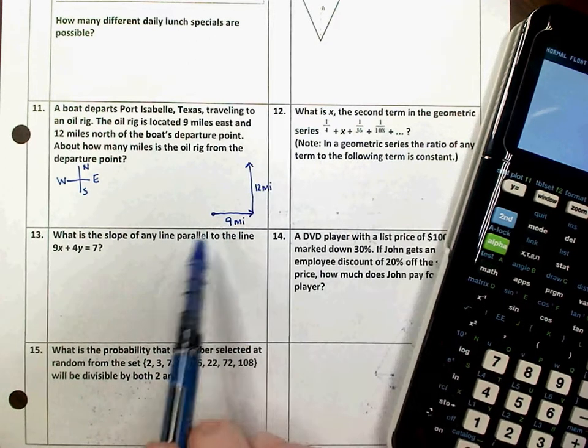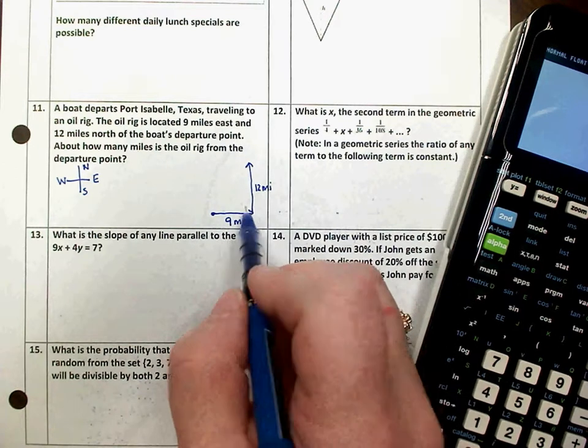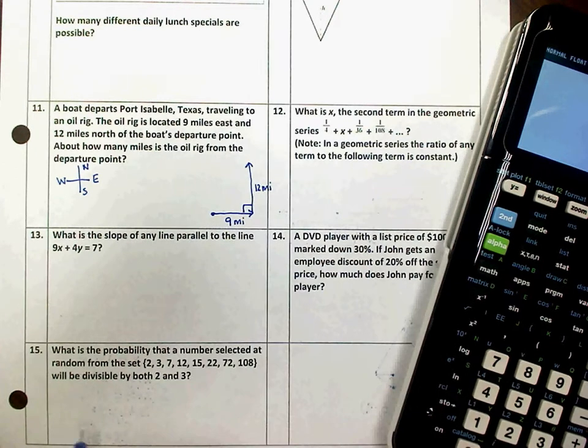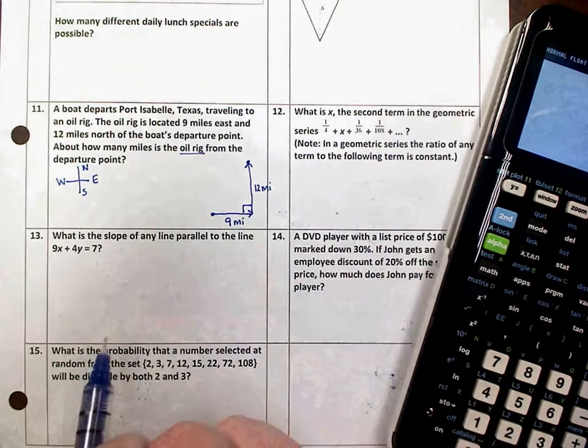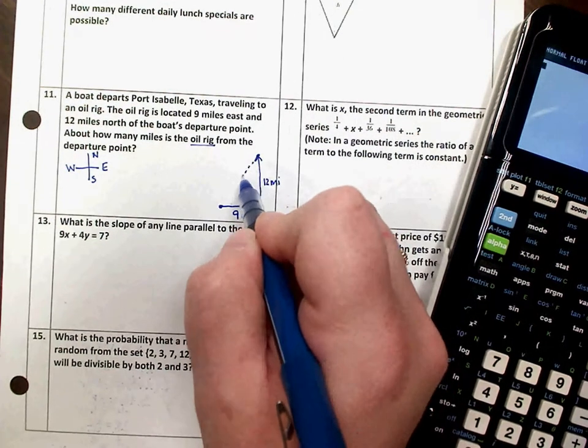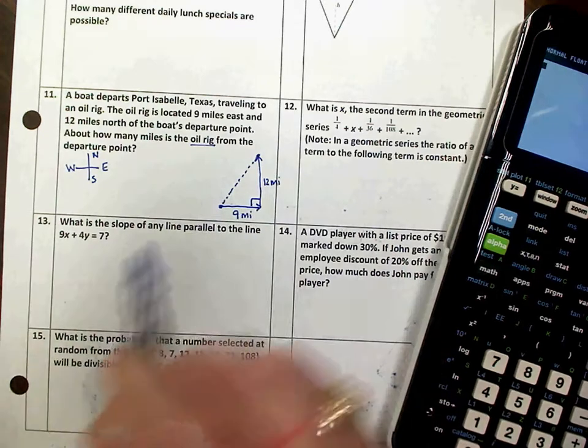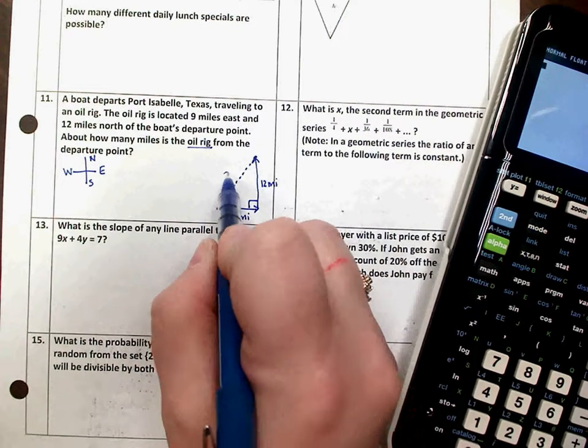So when you switch directions from east to north, you're going to create a right angle relationship. So this is where we stop at the oil rig, but we want to know how far the oil rig is from where we started. And so that distance is what we're trying to find.